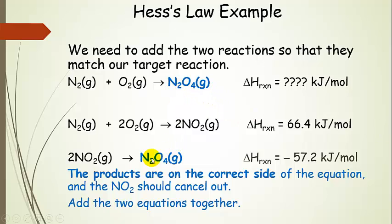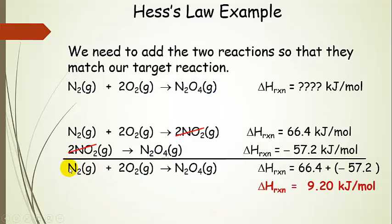Moving on to the second equation: we notice we have 2 nitrogen dioxides going to dinitrogen tetroxide, and dinitrogen tetroxide is on the correct side — the product side of the target reaction. So we're thinking: let's leave both of them alone and try adding them together. When we add the first and second reactions, the 2 nitrogen dioxides cancel out because they're on opposite sides. We end up with our target reaction. That's crucial — we want it to match at the end. Then we just add up our delta H reactions.